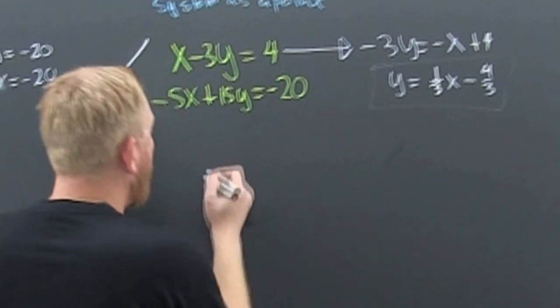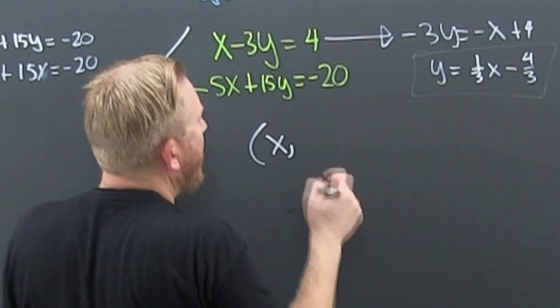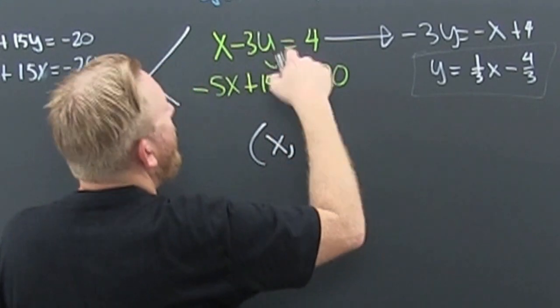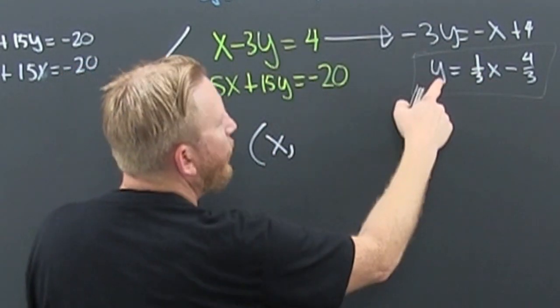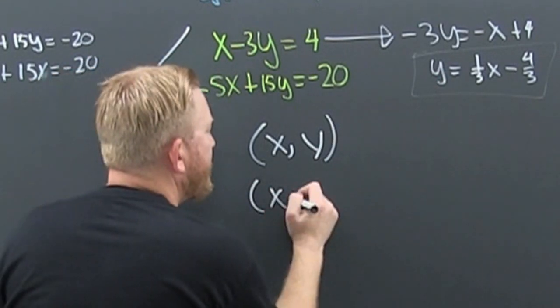Now I can write my point as (x, y). What's x? It's just x, it's whatever it wants to be. Why depends on whatever x is, but what's my y? I'm writing my solution as (x, y).